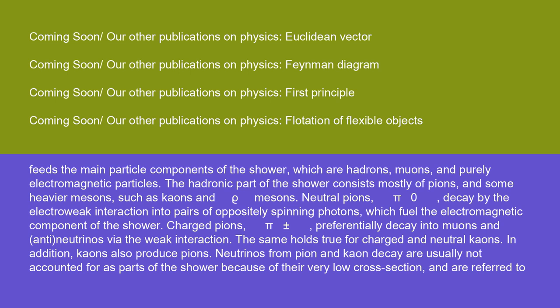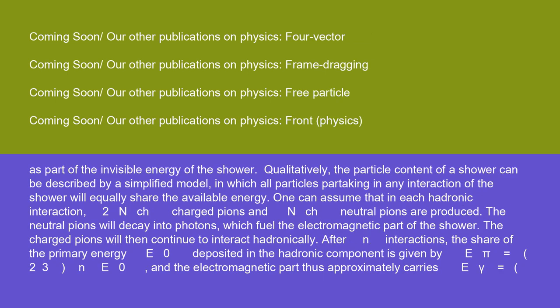Charged pions, pi-plus or minus, preferentially decay into muons and anti-neutrinos via the weak interaction. The same holds true for charged and neutral kaons. In addition, kaons also produce pions. Neutrinos from pion and kaon decay are usually not accounted for as parts of the shower because of their very low cross-section and are referred to as part of the invisible energy of the shower.